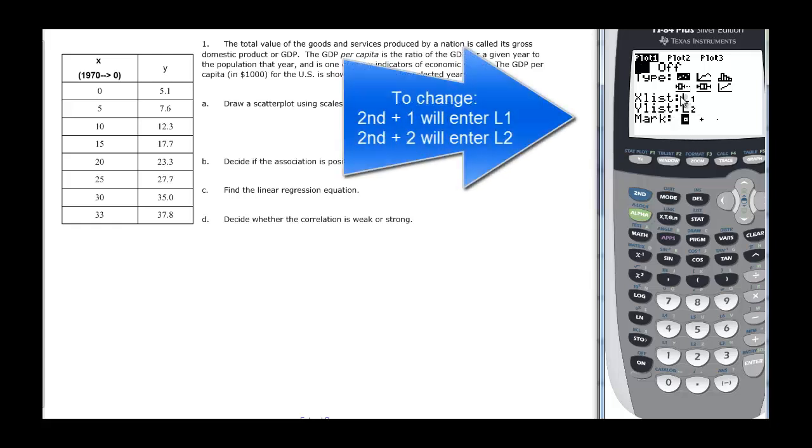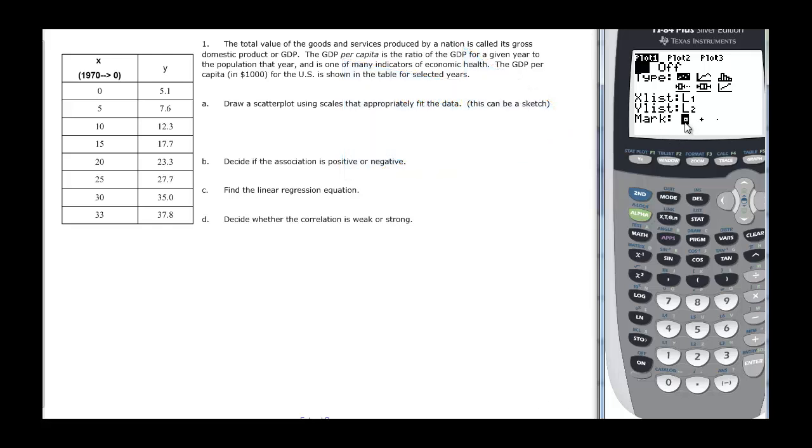And then the other important part here is this X list and Y list. L1 is going to be the X values, and L2 is the Y values. It might not be set up that way, so if you just take a look at it real quick, you'll know that it's set up that way, and then you never have to change it. And I personally like to use a box for my mark, just so I can see the difference between it and if I happen to graph a line on top of it. But you can do any mark you want.